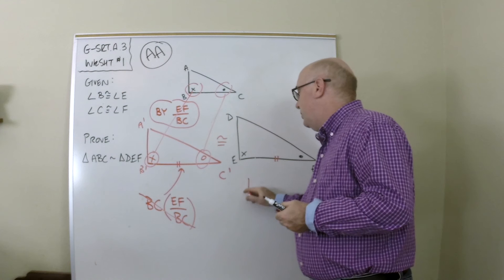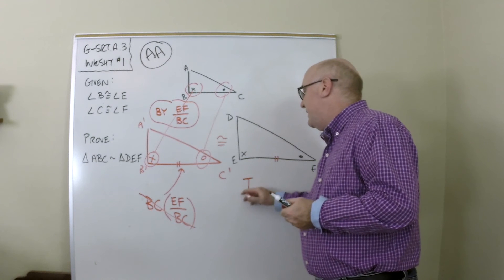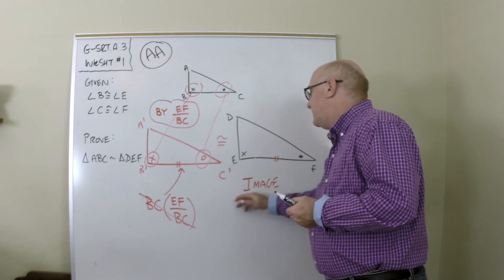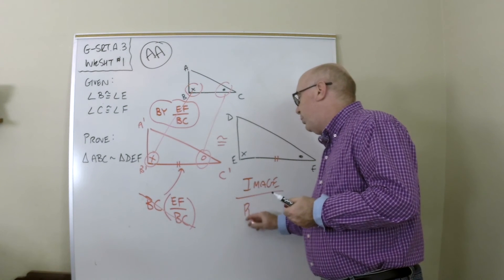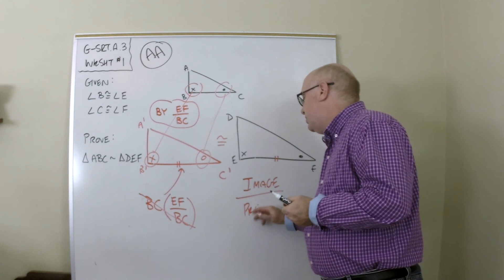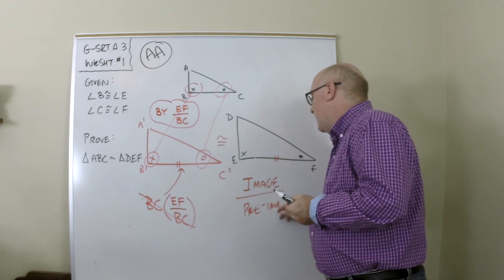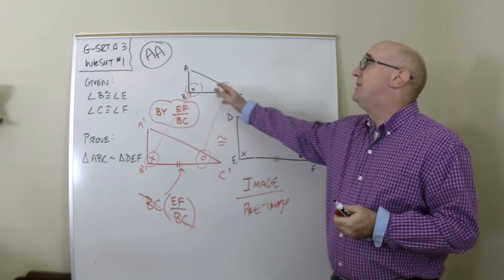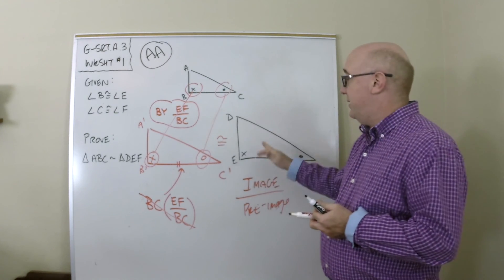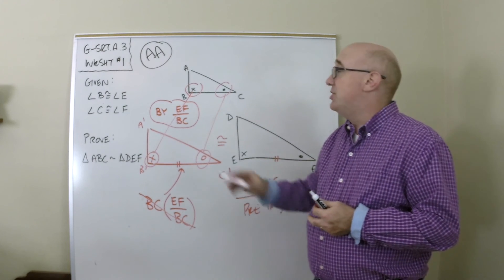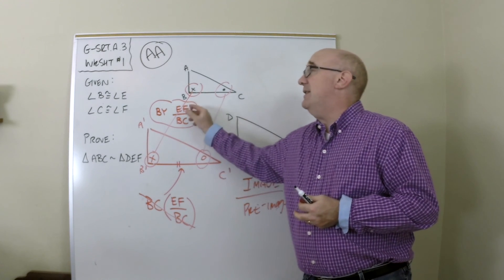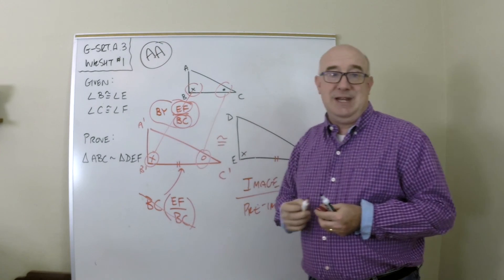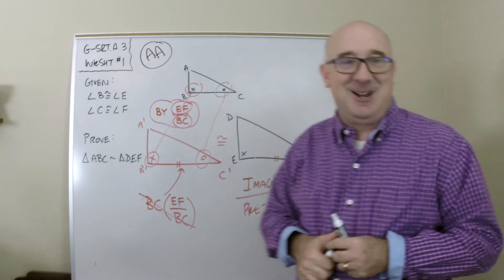When you pick a scale factor, you always go with the image over the pre-image — what you want over what you are. I was BC and I wanted to become EF, so I used the image over the pre-image: EF over BC. Good luck with this.